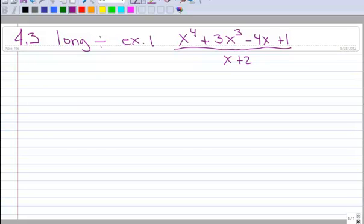x to the fourth plus 3x third minus 4x plus 1 all divided by x plus 2. So this is going to be a similar thing to back in fourth grade when you did long division of numbers. It's a similar kind of thing.